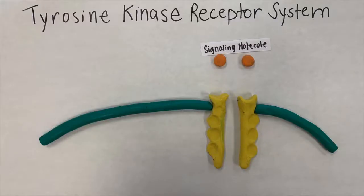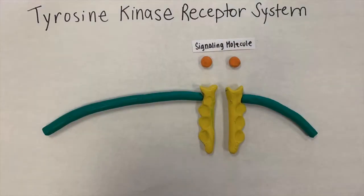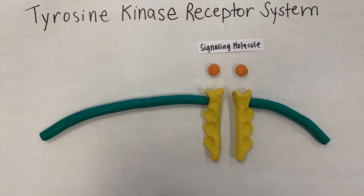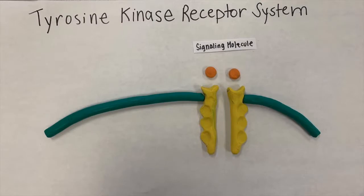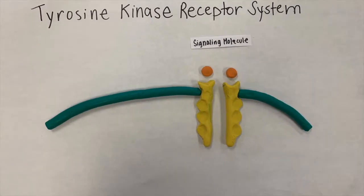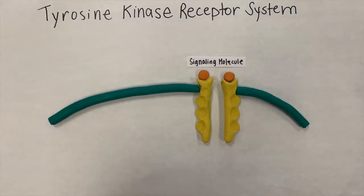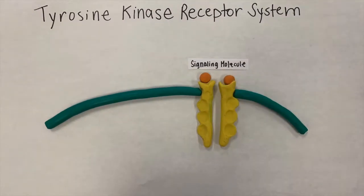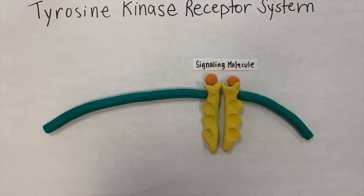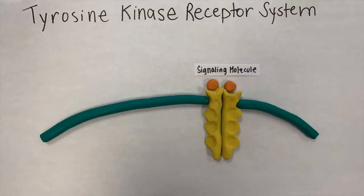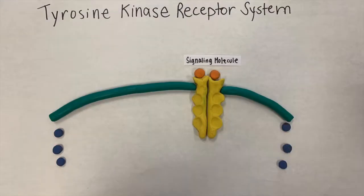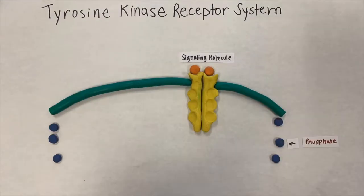In the tyrosine kinase receptor system, the tyrosine kinase receptor receives a signal. The receptor then binds to the signal molecules, and then the two separate parts come together forming a dimer.